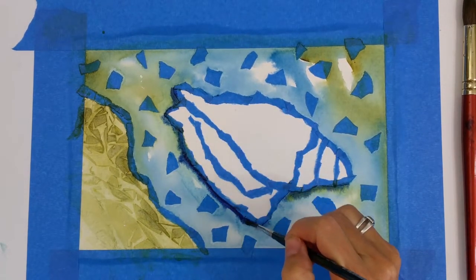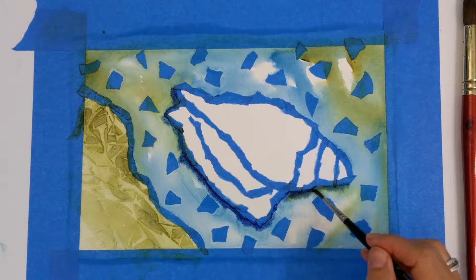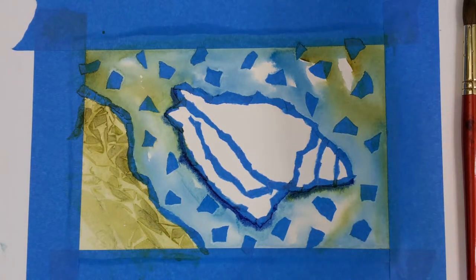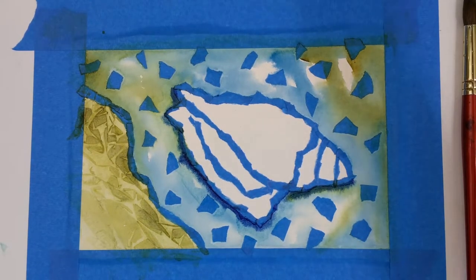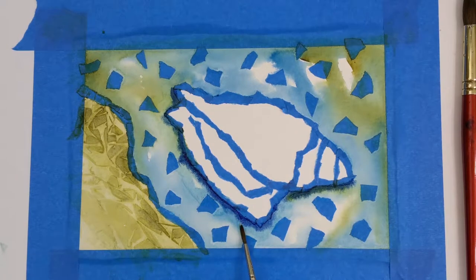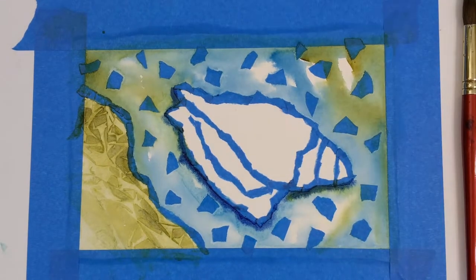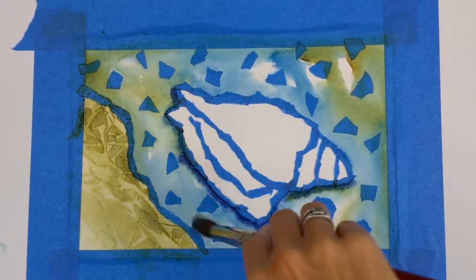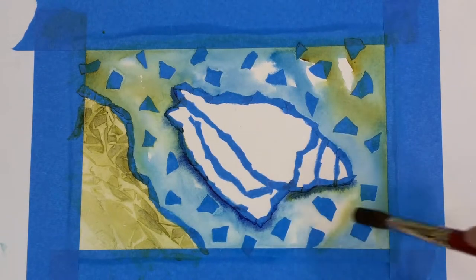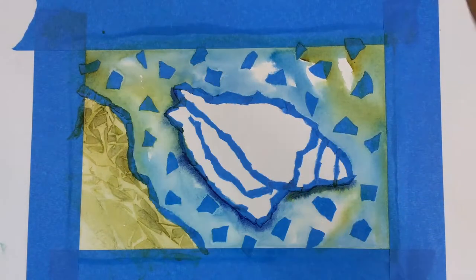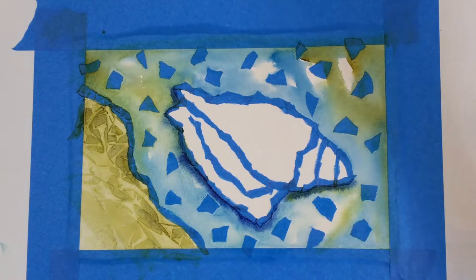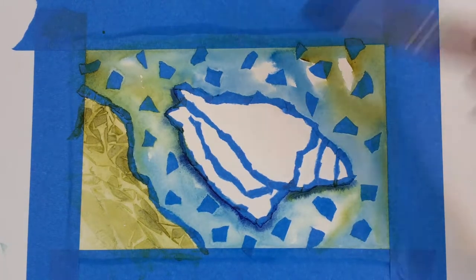I like to get it really dark next to the edge so that when it bleeds out, it does look like a drop shadow. So now I'm going to take a little bit of extra clear water and just go outside where I put that water before so it bleeds out and doesn't just stop at a weird hard outline.